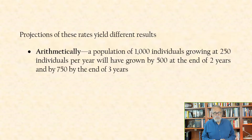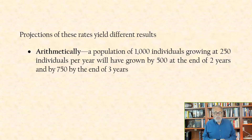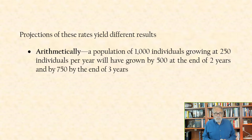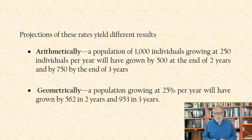Projections of these rates yield different results. Arithmetically, a population of 1,000 individuals growing at 250 individuals per year will have grown by 500 at the end of two years and by 750 by the end of three years. Geometrically, a population growing at 25% per year will have grown by 562 in two years and 953 in three years.